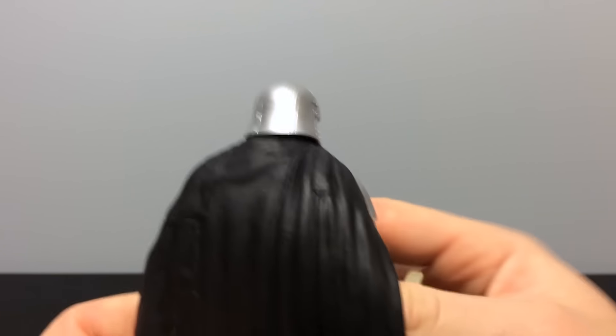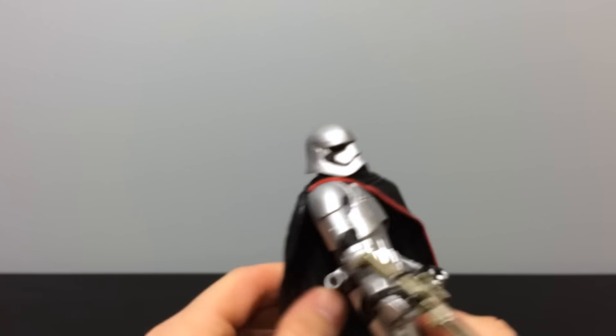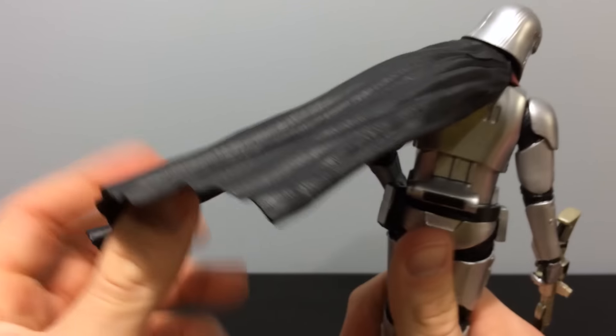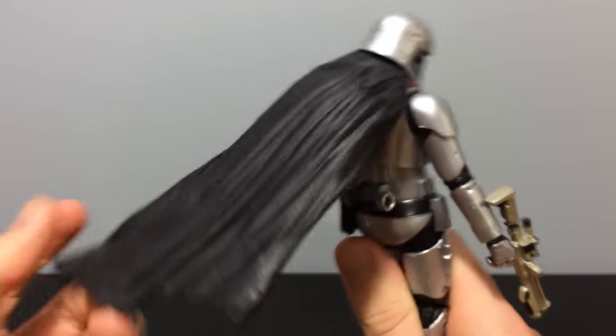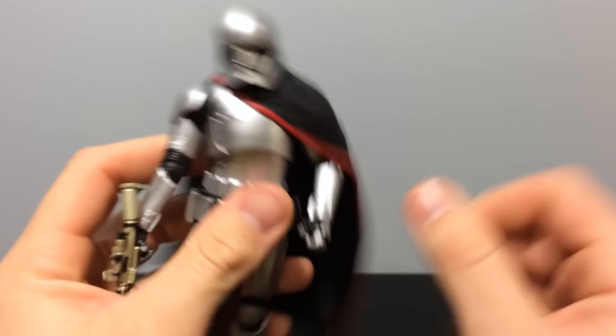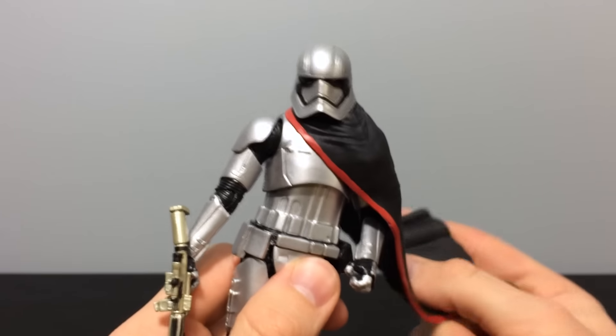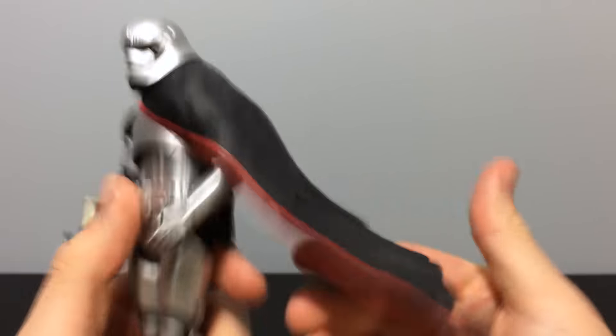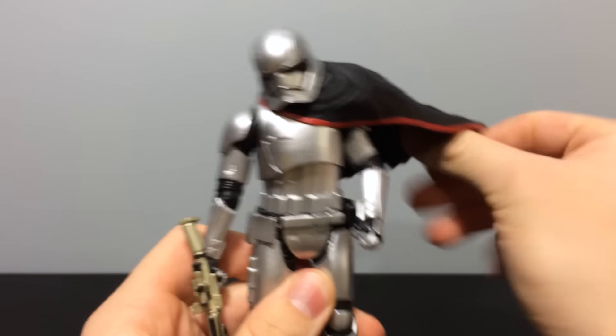Cape is a hard plastic. Looks like it does not come off. It will not flail in the air because it is plastic and not a fabric. I wish it was a fabric. Why would they give Darth Vader a fabric cape? But they want to give Captain Phasma one.